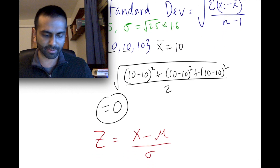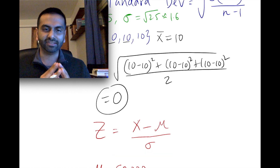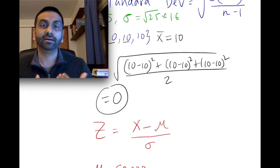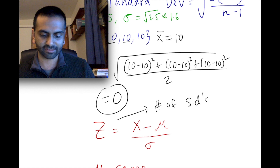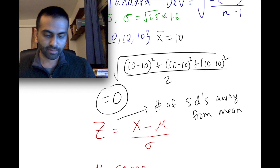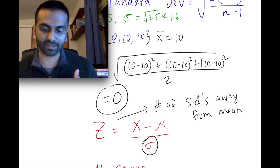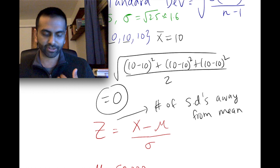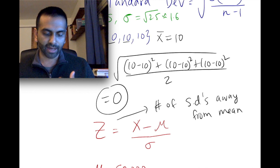Now let's talk about the z-value, or z-score. The z is essentially how many standard deviations you are away from the mean. The formula is: z = (x − μ) / σ, where μ means the population mean and σ means standard deviation. So your value minus the mean tells how far off you are from the average, and dividing by the standard deviation gives you the number of standard deviations.